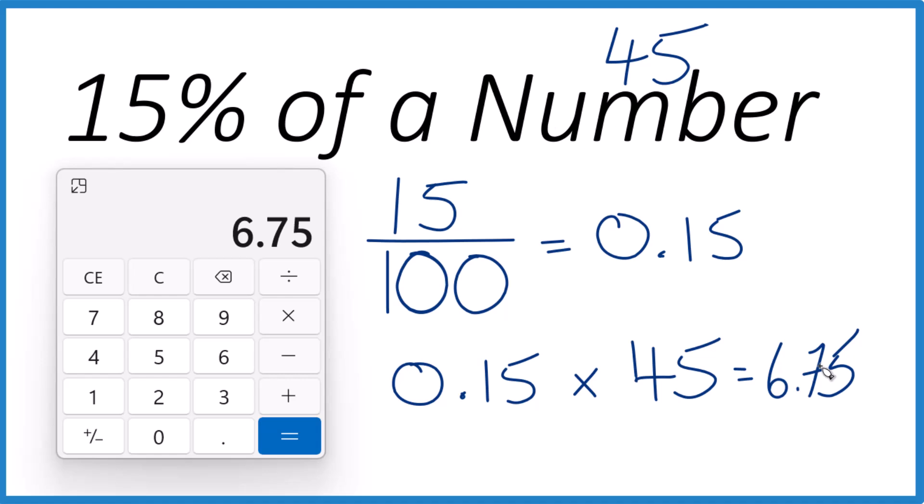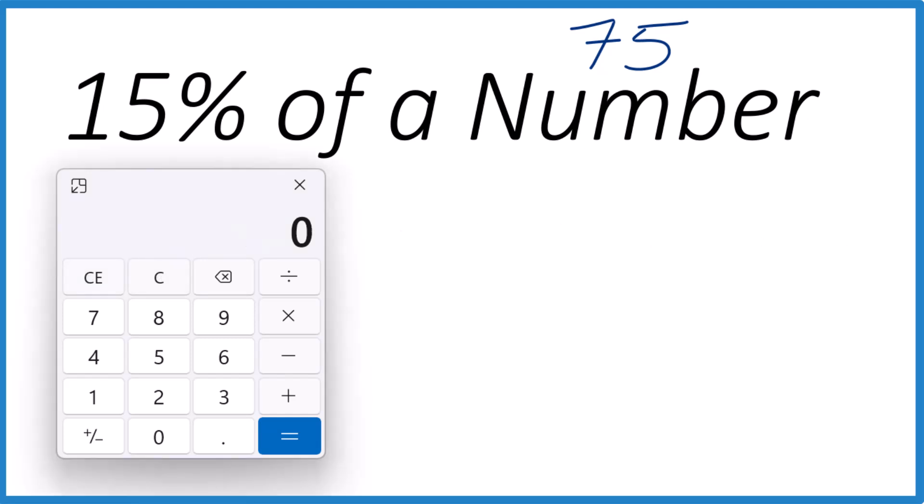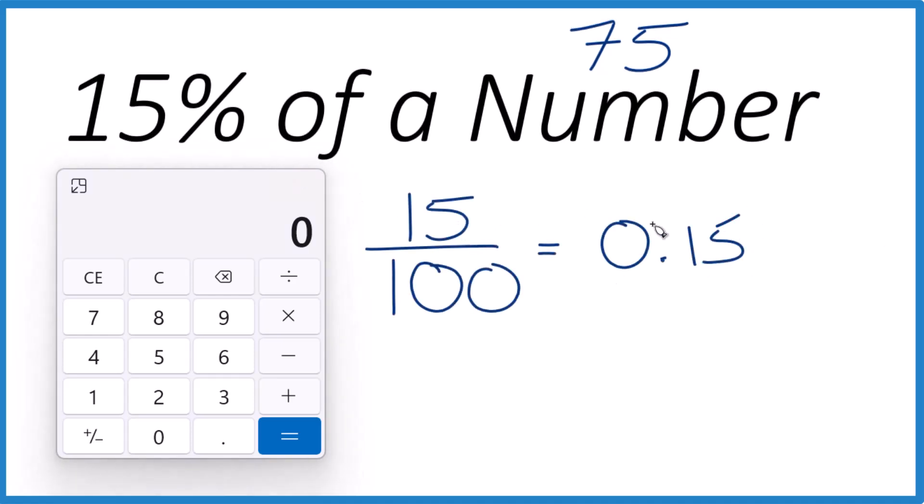Alright, pause, you try it. How about 15% of 75? So we convert our 15% to a decimal. We divide by 100. Same thing as before. And now we just multiply that decimal by the number.